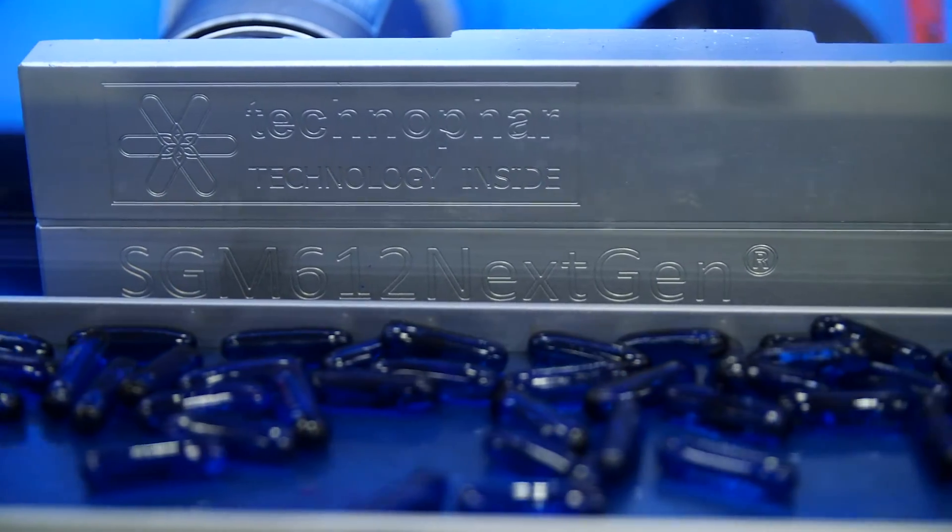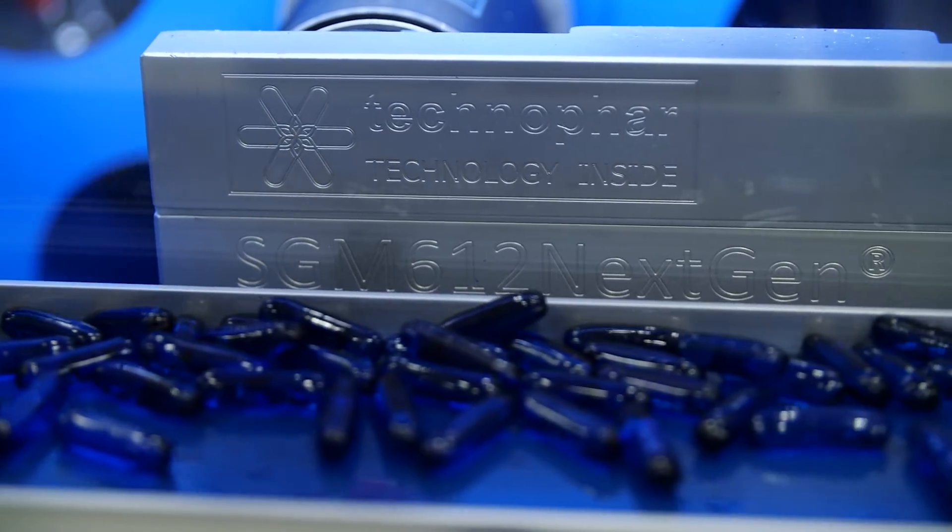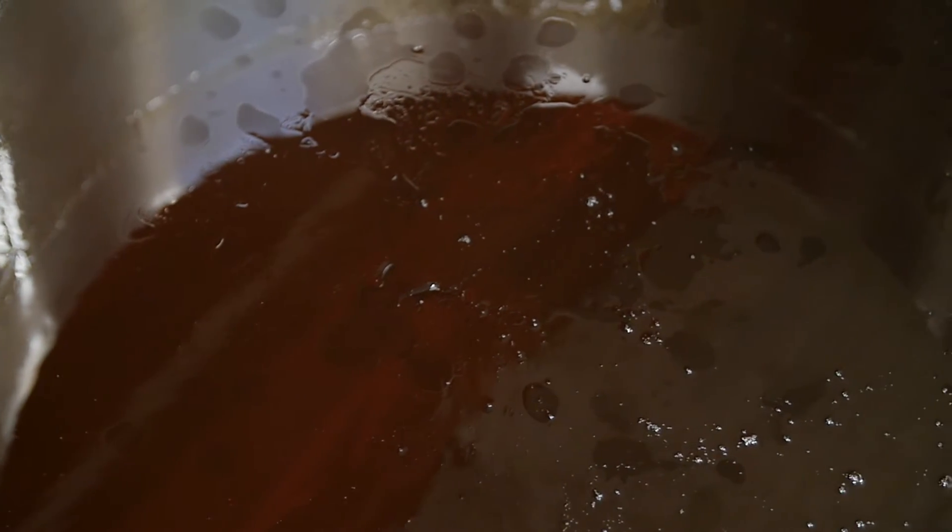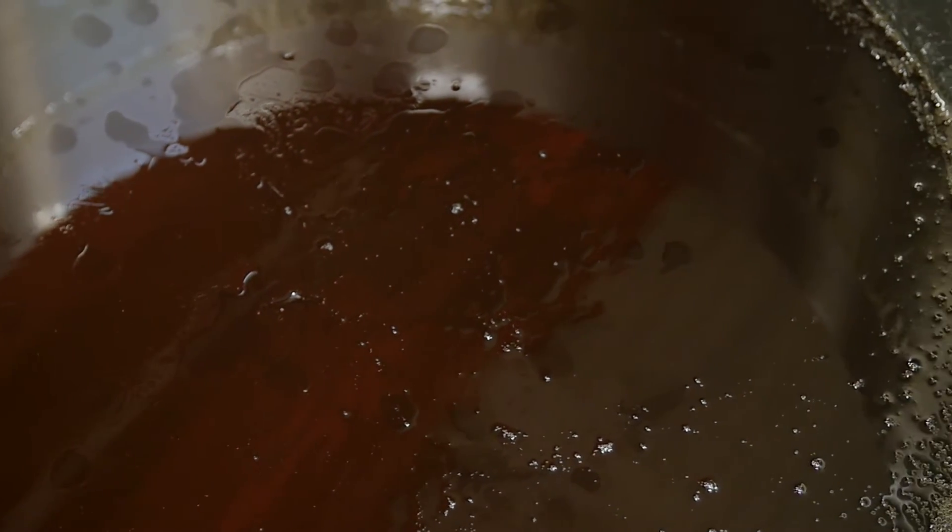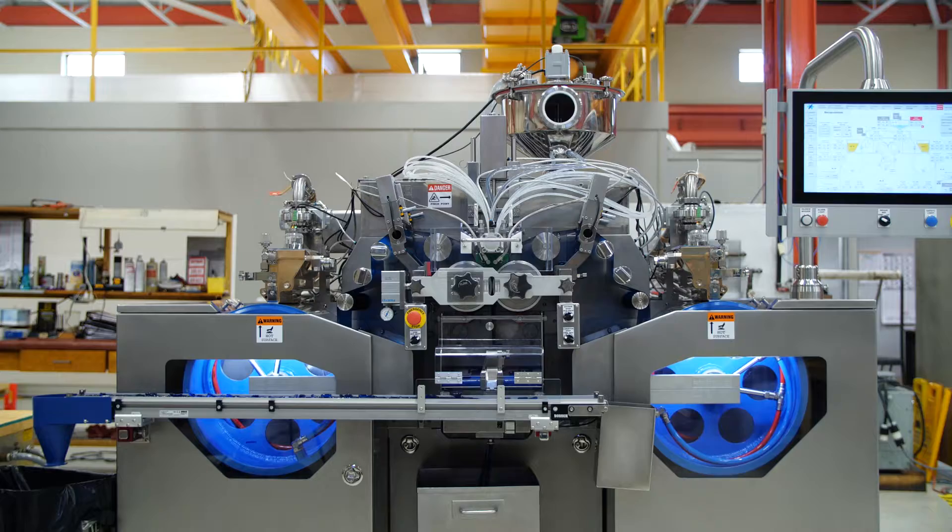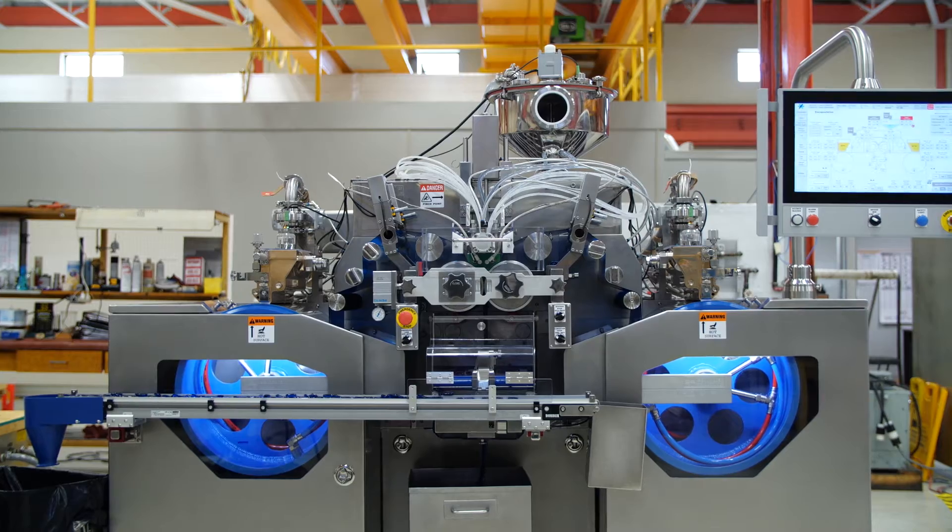The next step in the process is to prepare the capsule's ingredients for encapsulation. These ingredients consist of liquefied gelatin, which will become the capsule's exterior, and the capsule's liquid fill material, which can be in either oil, suspension, or paste form.